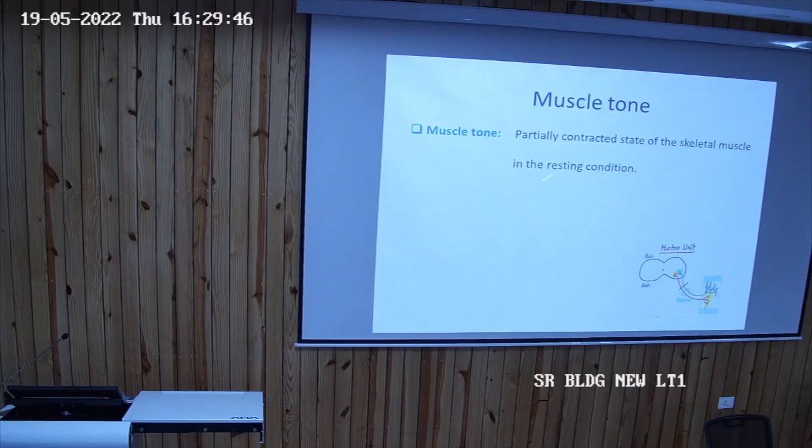So the tone will depend on the number of motor units which are involved in that contraction. Okay? So the more the motor units are involved, the more the tone will depend on it. And that depends on, and normally in resting state there is some contraction which is available in the muscle. Why is it so? Because of the asynchronous discharge.